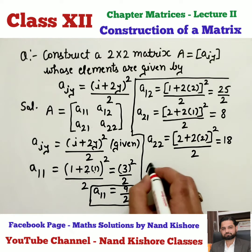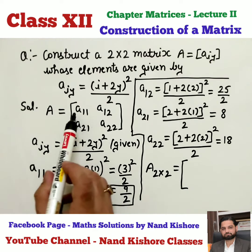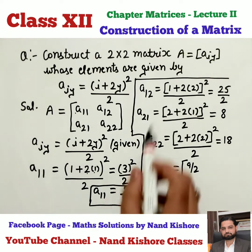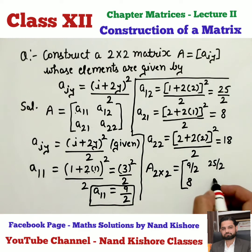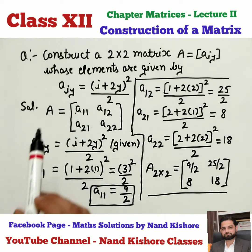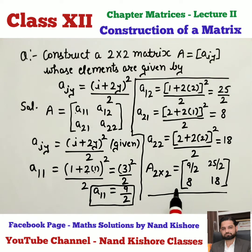So my 2 by 2 matrix will be — let me just put the values. A11 was 9/2, so 9/2 at this place. A12 is 25/2. A21 is 8. And A22 is 18. This is my final answer. I was told to construct a 2 by 2 matrix based upon this condition, and we have formed this 2 by 2 matrix having these 4 elements: 9/2, 25/2, 8, and 18. This is a very easy concept. We are going to do one more question of the same concept.